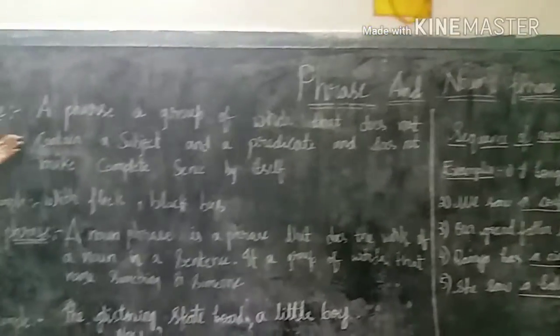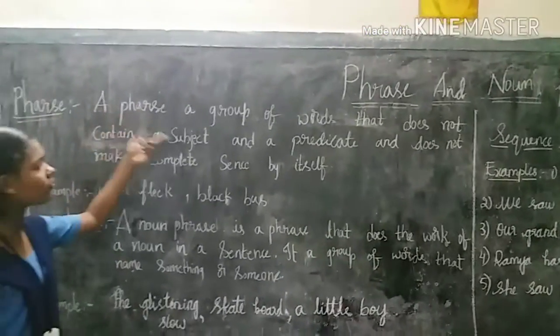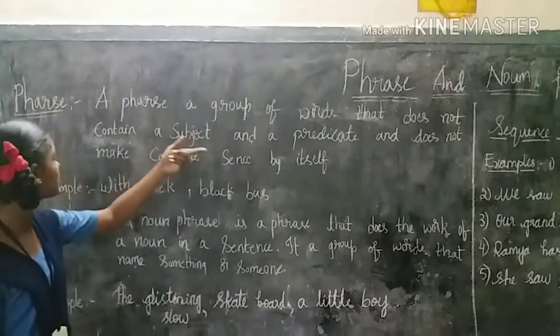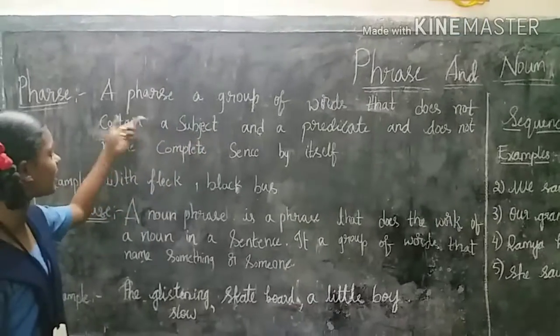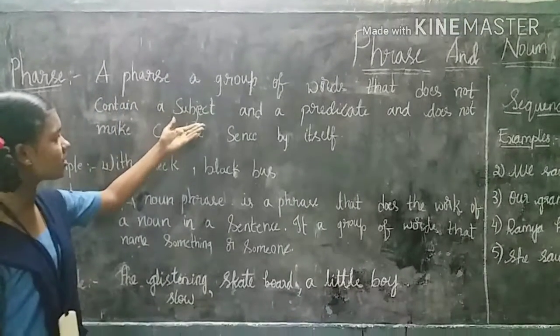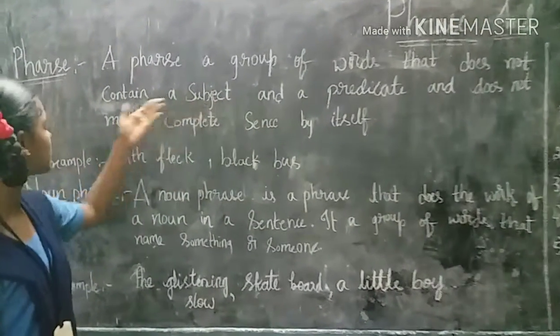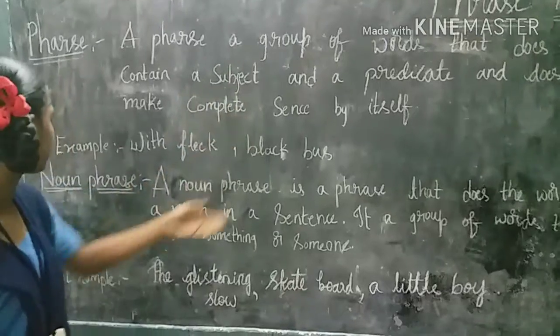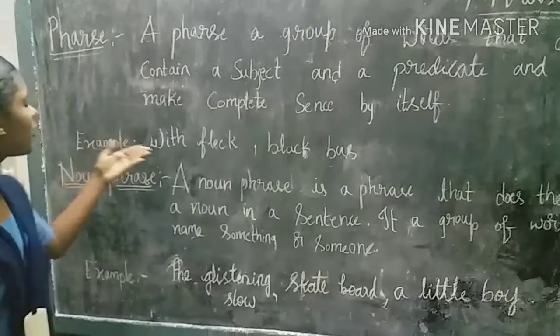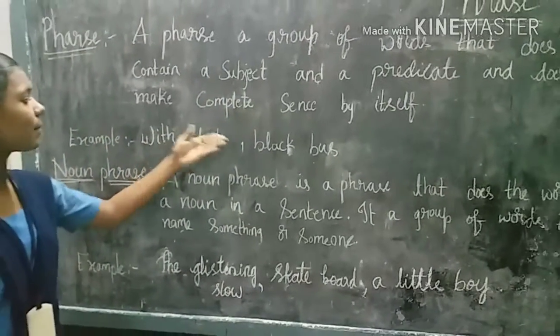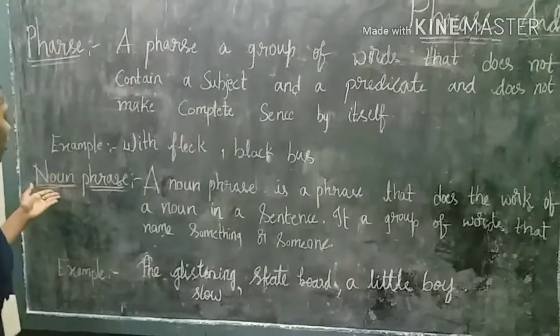Phrase. A phrase is a group of words that does not contain a subject and a predicate and does not make complete sense by itself. Example: with flea, black person.